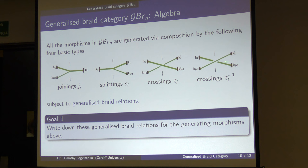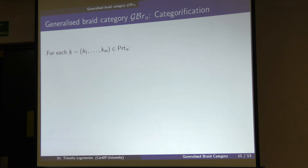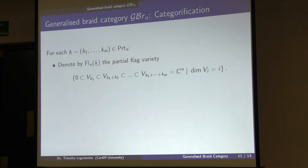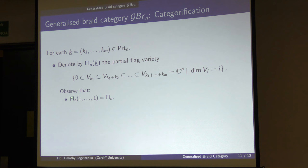To categorify the generalized braid category, you need to exhibit a functor for each of these four basic types, and you need to check that these functors satisfy the braid relations. Here is what we believe happens with flag varieties. For each partition K of N, denote by FL_{N,K} the corresponding partial flag variety. If the partition consists of k_1 + ... + k_m, then we have subspaces V_{k_1}, V_{k_1+k_2}, and so on until V_{k_1+...+k_m} = C^N. For example, if you have a partition of all ones, the corresponding partial flag variety is the complete flag variety. For partition (1, N−1), you get P^{N−1}. For partition (M, N−M), you get the Grassmannian of M-planes in N-space.